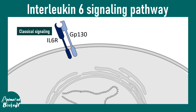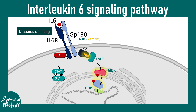Now let's talk about the interleukin-6 signaling pathway. In the classical signaling pathway, the interleukin-6 receptor and GP130 both bind to interleukin-6, and both receptors are important to initiate signaling. After that, there could be a MAP kinase-mediated pathway involving downstream regulators like RAS, RAF, MEK, and ERK, all leading to downstream gene activation. Also, the JAK-STAT signaling pathway underlies interleukin-6 classical signaling.